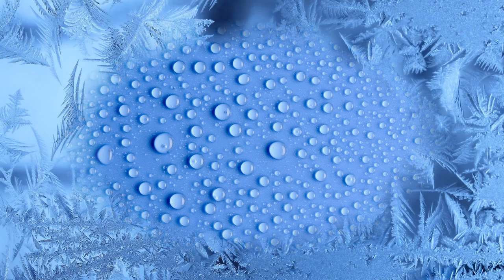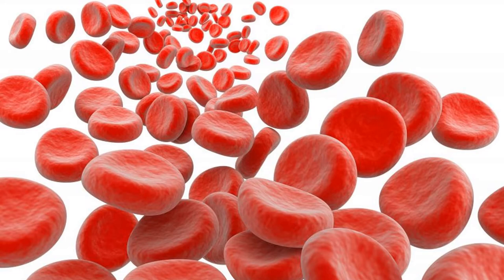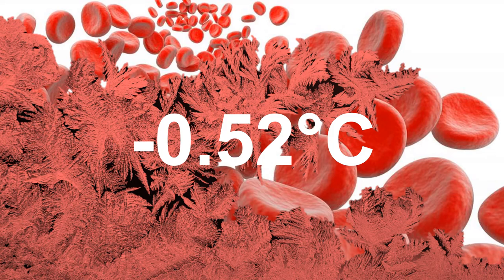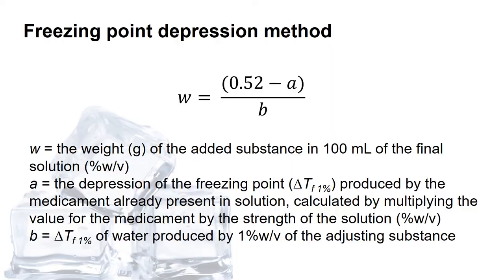Everyone knows that our water will freeze at 0 degrees Celsius. And for our blood plasma is very unique, it will freeze at a lower temperature than the water, which is negative 0.52 degrees Celsius. By using this freezing point depression method, it is very easy for us to calculate the osmotic pressure achieved because the freezing point depression is proportional to one another. So it means that if our product is able to freeze at the same temperature as blood plasma, then our product is considered isotonic.